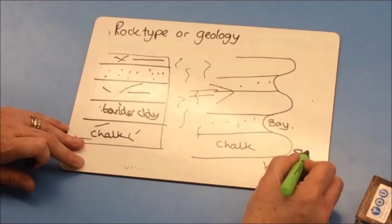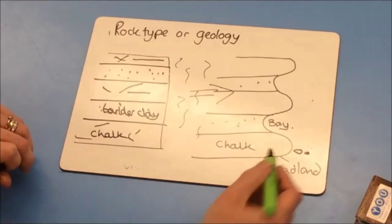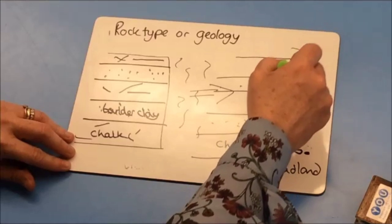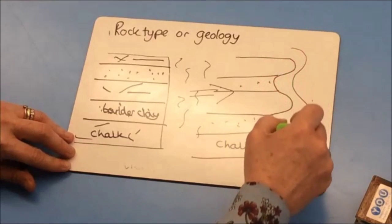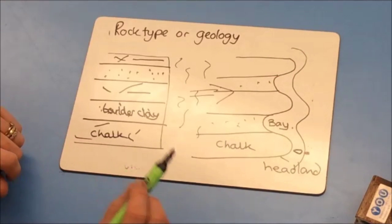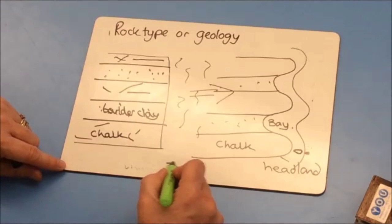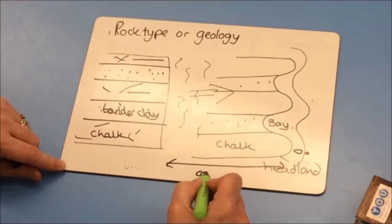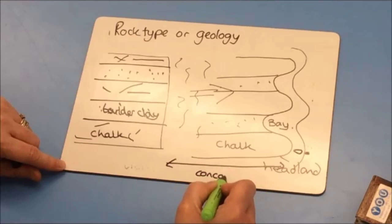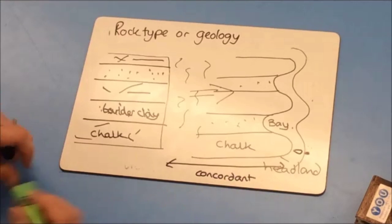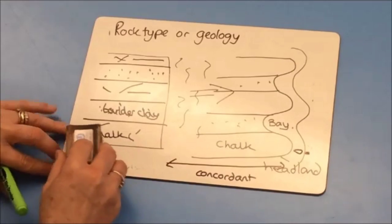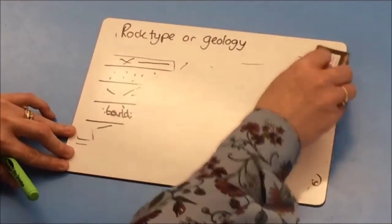In the headland areas you might also get stacks and stumps appearing, along with arches. A coastline that is uneven like this is called discordant, whereas a straight coastline is called a concordant coastline. That is the influence of geology or rock type on the shape of the coastline.